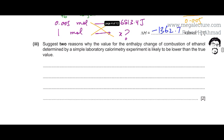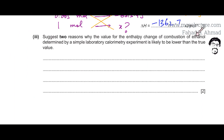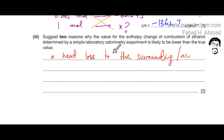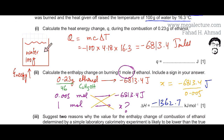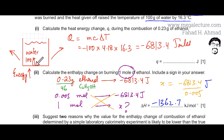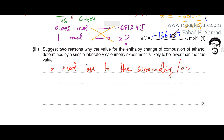Moving to part 3: we are asked for two reasons why the value for enthalpy change of combustion of ethanol determined by a simple laboratory calorimetry experiment is likely to be lower than the true value. The first reason is that there will be significant heat loss to the surroundings — to the air or to the containers. Not all of the energy released goes into heating the water; a lot is lost to the environment, so the calculated energy absorbed is lower.